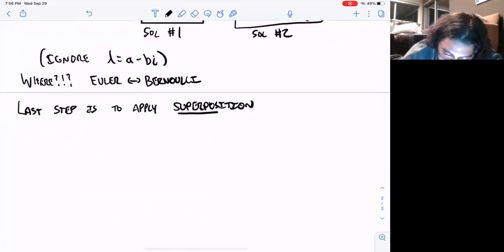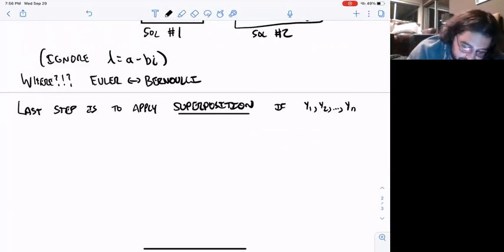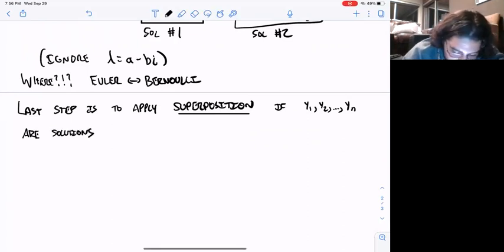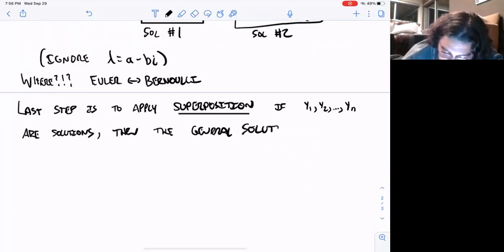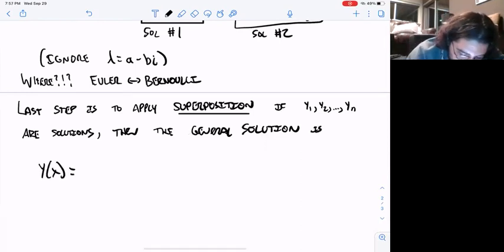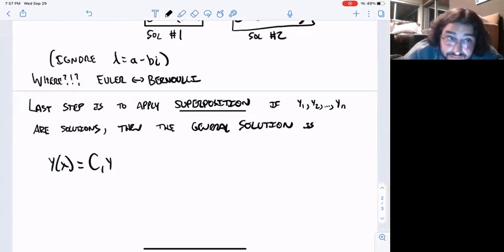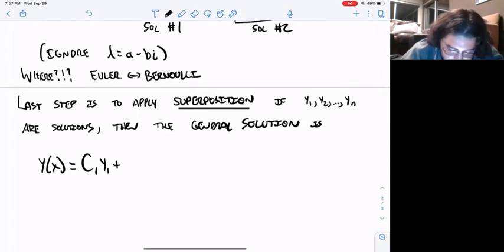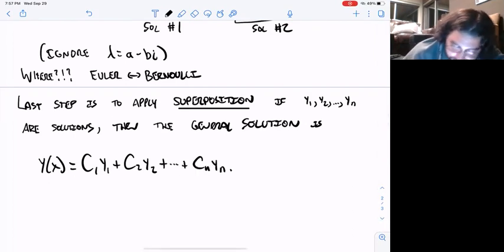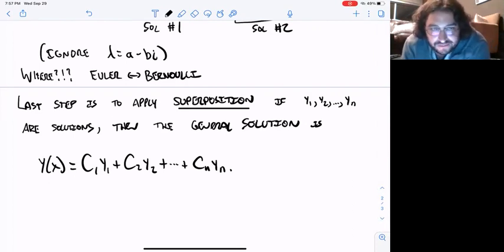Then the last step of this method is to apply what's called superposition, meaning: if you have n different solutions, then the general solution is simply every one of those solutions with a constant attached to it, all added together. They call this linear combinations. That's the general solution.